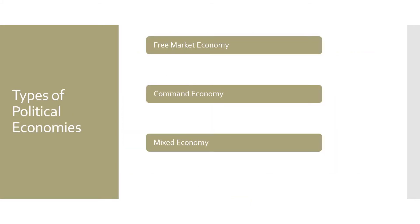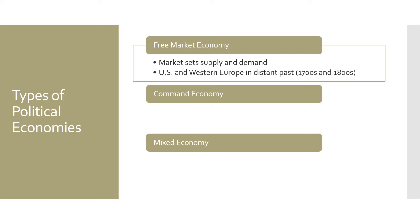Returning to the three different types of political economy, the real differences between them is in how markets in general are regulated. In a free market economy, the market sets supply and demand — the government doesn't get involved at all in pizza selling, the selling of cars, or the selling of oil. It is the number of buyers and sellers working together to set supply and demand, with no government intervention whatsoever.